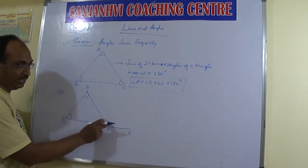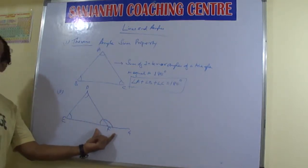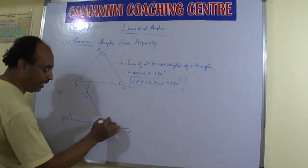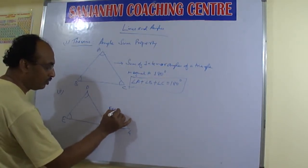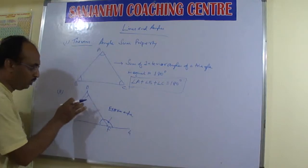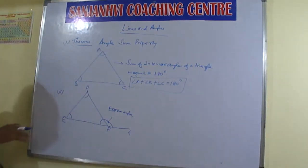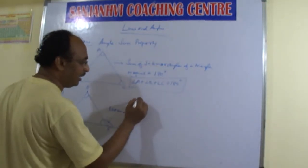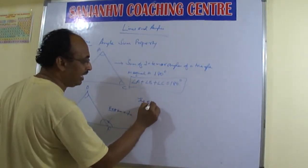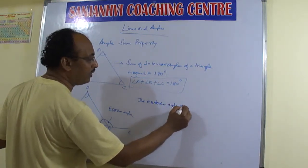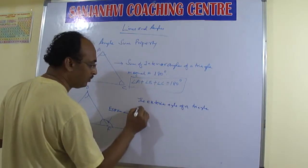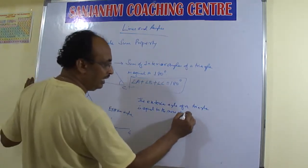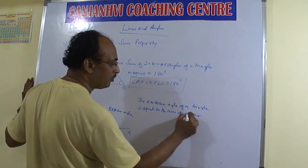This exterior angle and the adjacent interior angle will become supplementary angles. The particular angle is given the name 'exterior angle,' and the two non-adjacent angles inside the triangle are called interior opposite angles — opposite to this exterior angle. The theorem states that the exterior angle of a triangle is equal to the sum of the interior opposite angles.